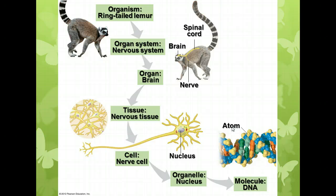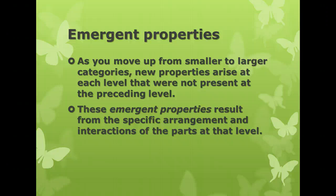All living things are somewhere in this hierarchy. They don't all go all the way to the top — some organisms are only single cells, so they'll stop at that level. But the point is they're still part of a population, which is part of a community, which is part of an ecosystem, which is part of the biosphere. As you move from smaller categories to larger ones, you'll find new properties that arise at each level that weren't present before — for instance, within a cell, molecules have particular properties, but when put together in a living cell, they work together to do a different kind of job. These are called emergent properties, and they result from the arrangements of and interactions between the parts at that level.